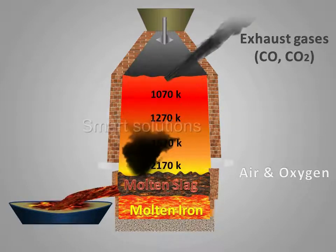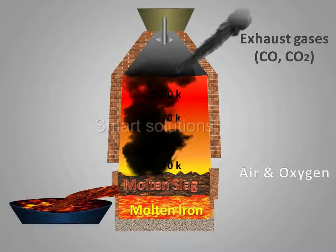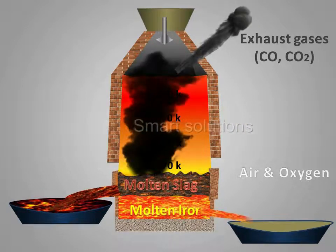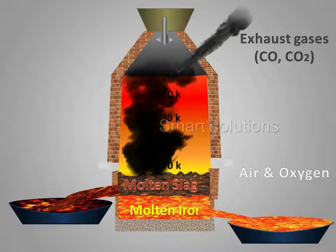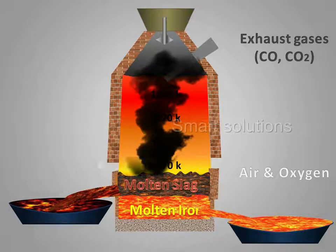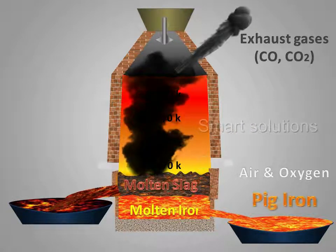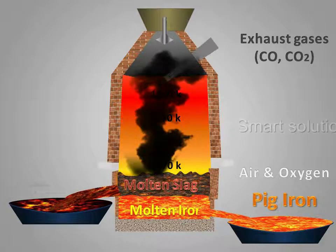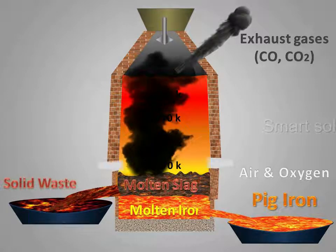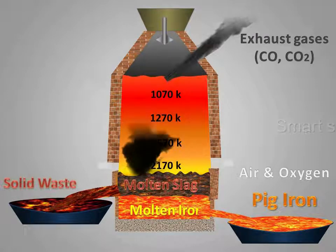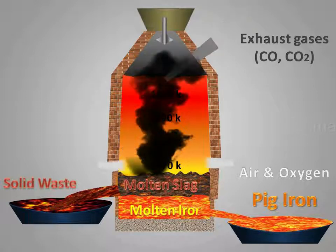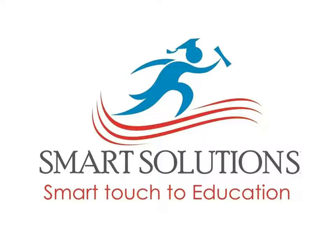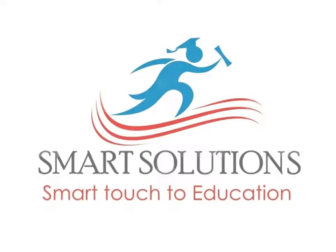The molten iron is separated from the slag. The iron obtained is called pig iron, which contains about four percent carbon and other impurities in small amounts.